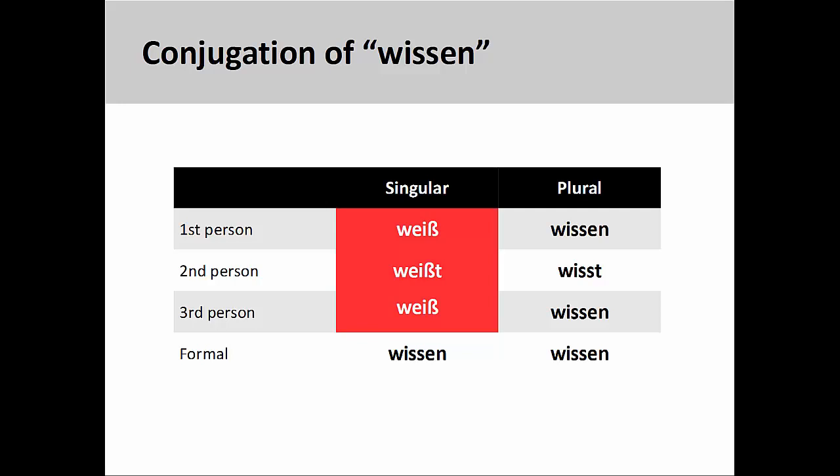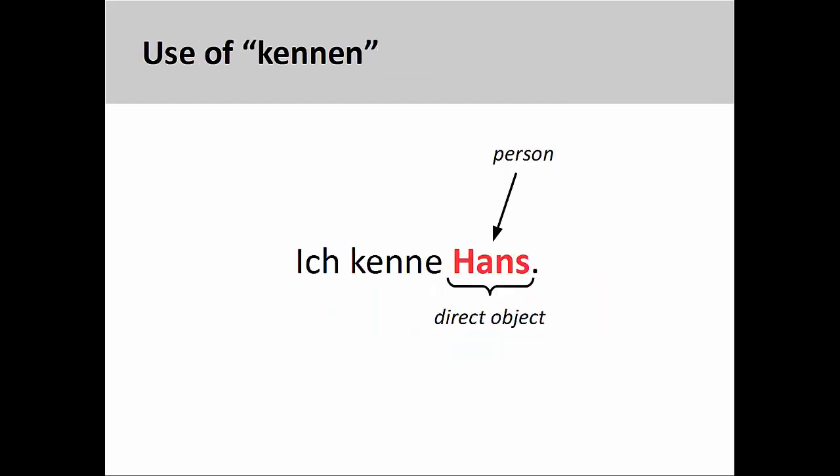Let's take a closer look now at how to use these two verbs. In the sentence on the screen, 'Ich kenne Hans' — I know Hans — the direct object of the verb is Hans. Since the direct object is a person, the verb Kennen must be used.